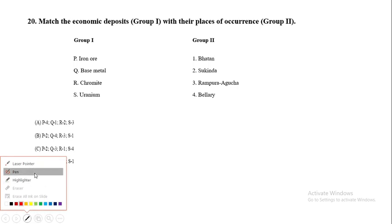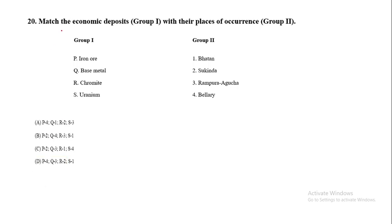The next question is a match-the-following from economic geology. We need to match economic deposits with their places of occurrence — Group 2 shows the places of occurrence, and we need to find which mineral or deposit occurs in which place.